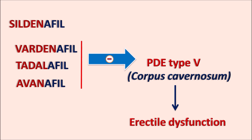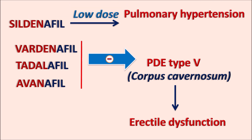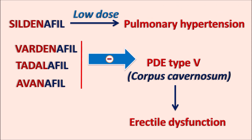Sildenafil is also available at a low dose which is used to treat pulmonary hypertension. Since sildenafil acts as a vasodilator, it can reduce arterial pressure, but it is more effective in reducing pulmonary hypertension by producing vasodilatation.